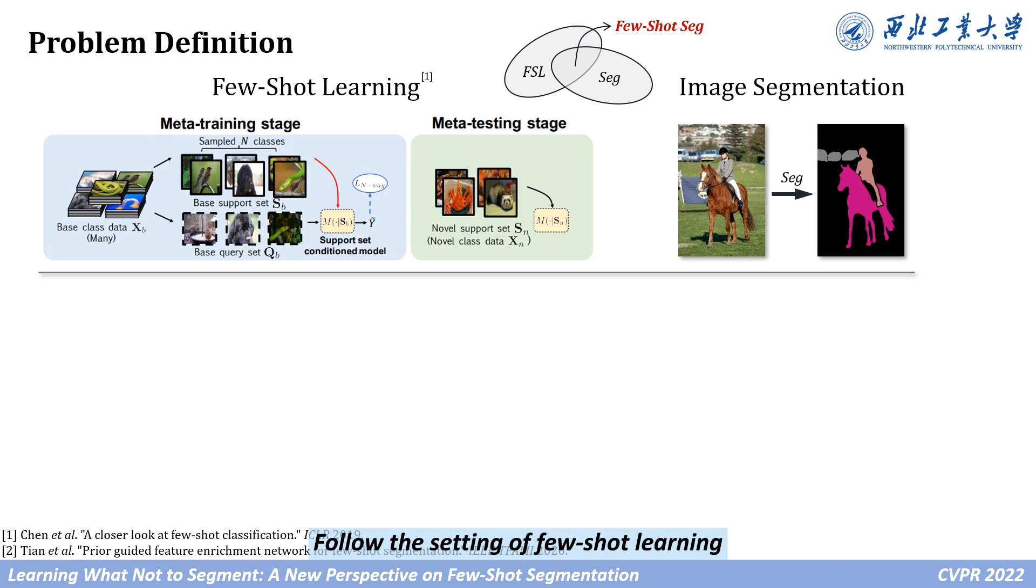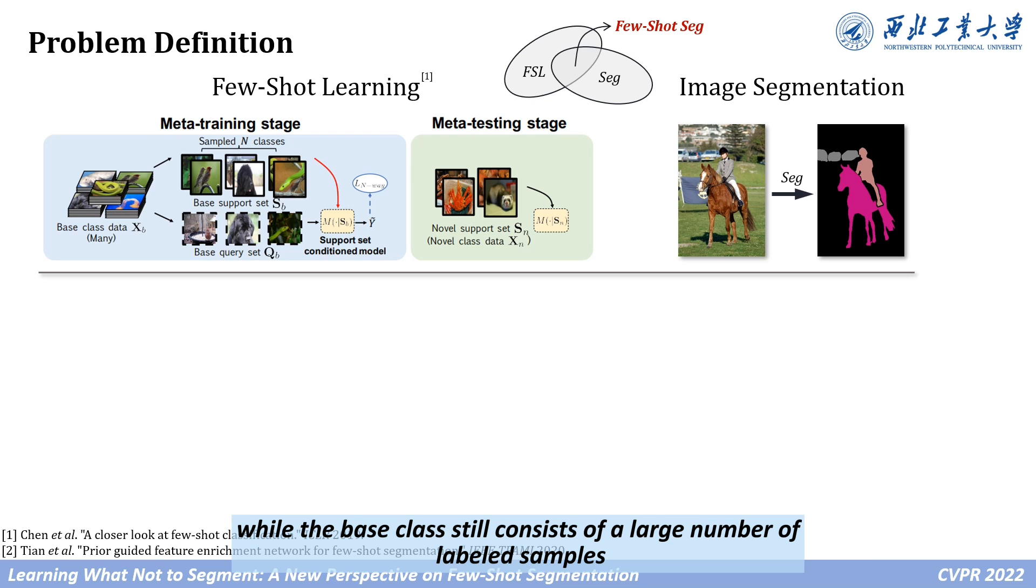Following the setting of Few-Shot Learning, the original dataset is divided into two parts: the base set and the novel set, according to categories. The term Few-Shot here refers to the samples of the novel class, where the base class still consists of a large number of labeled samples.